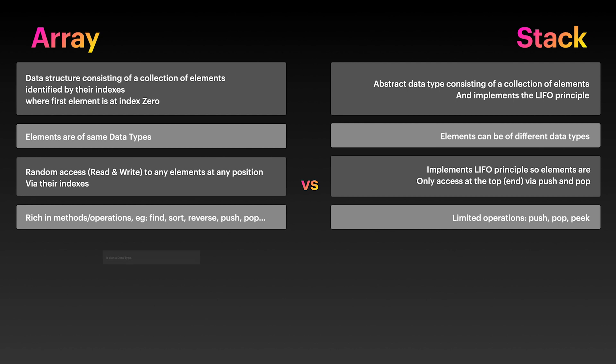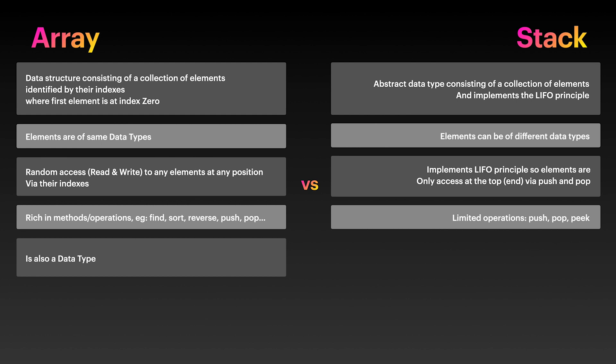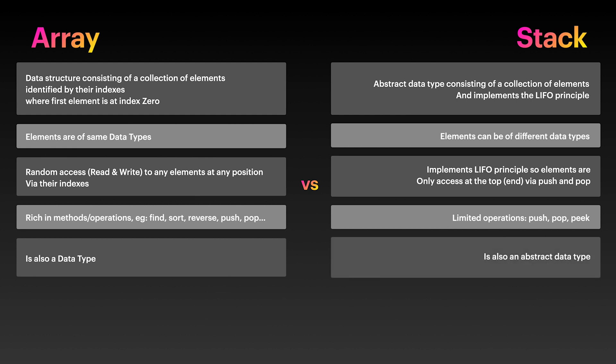Another difference is that array is also a data type, whereas stack is an abstract data type. This means that arrays are concrete concepts, while stack is a representation of a sequential collection of things — simply a mathematical model. Abstract data types are defined by their operations and values, and what makes a stack a stack is the fact that it implements the LIFO principle and has operations like pop and push.